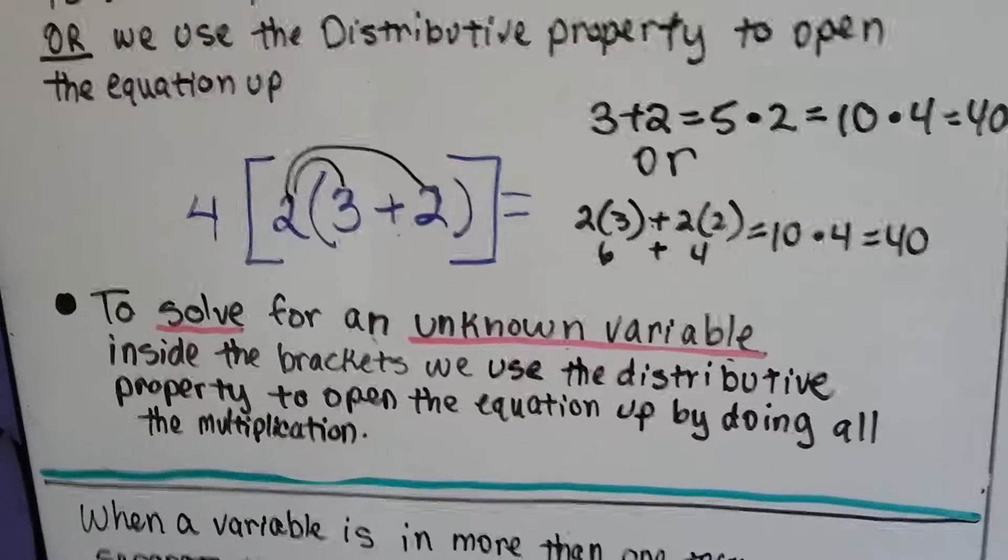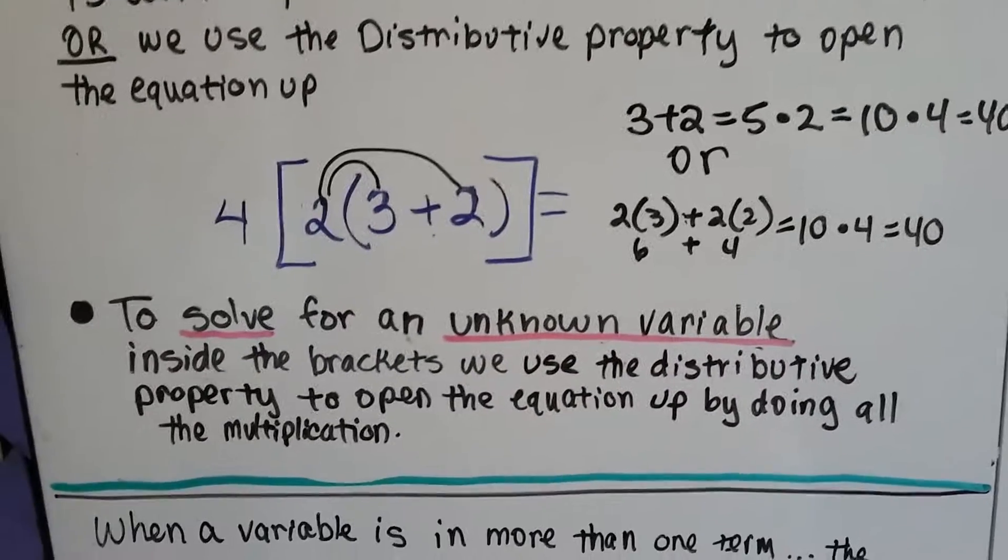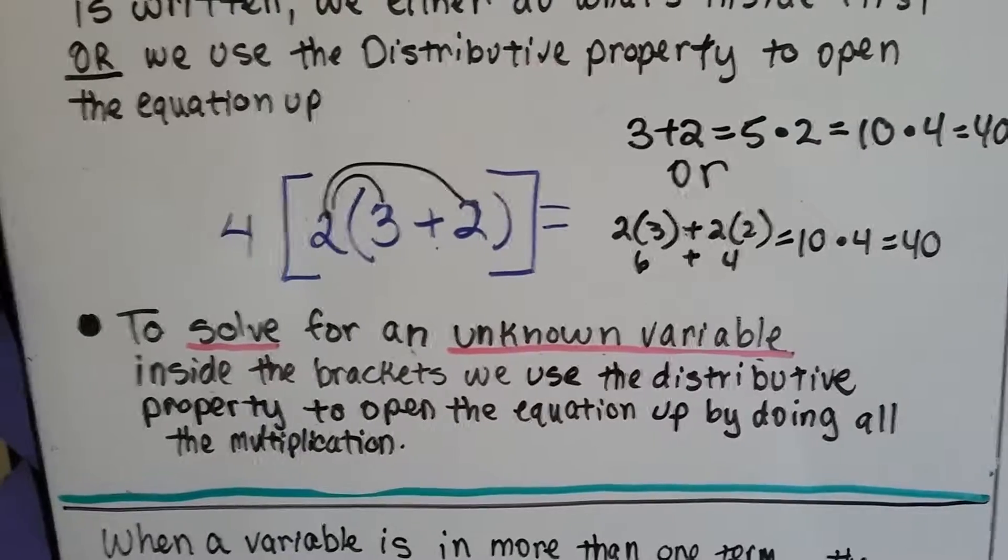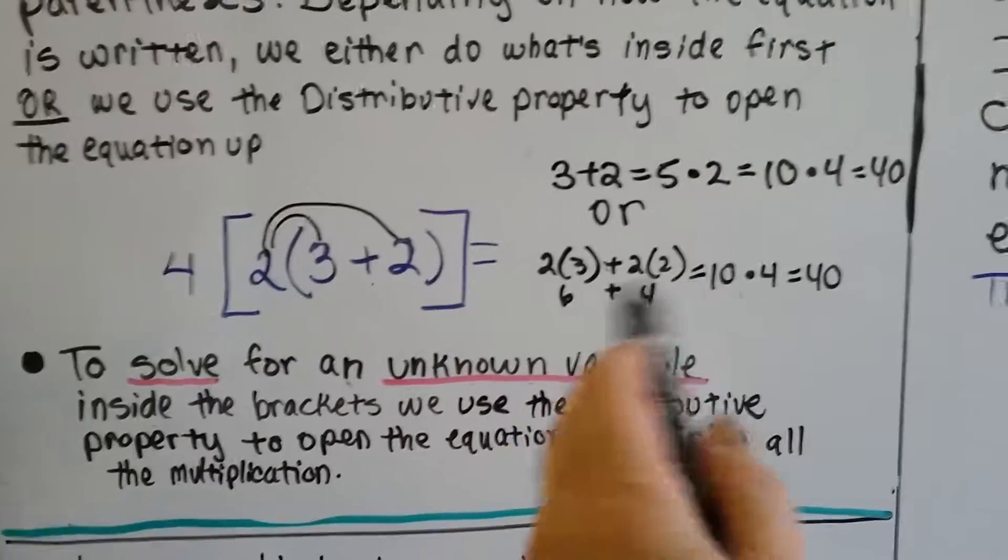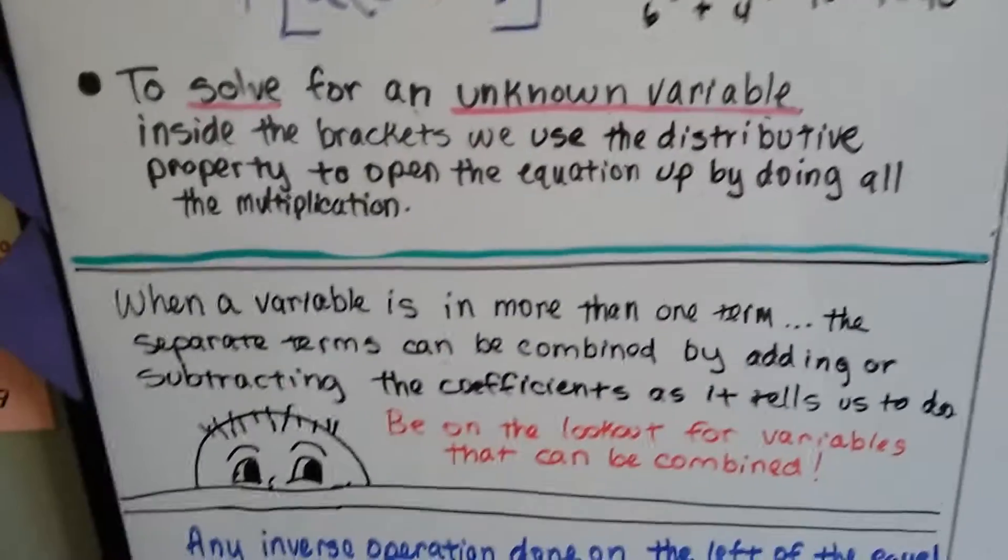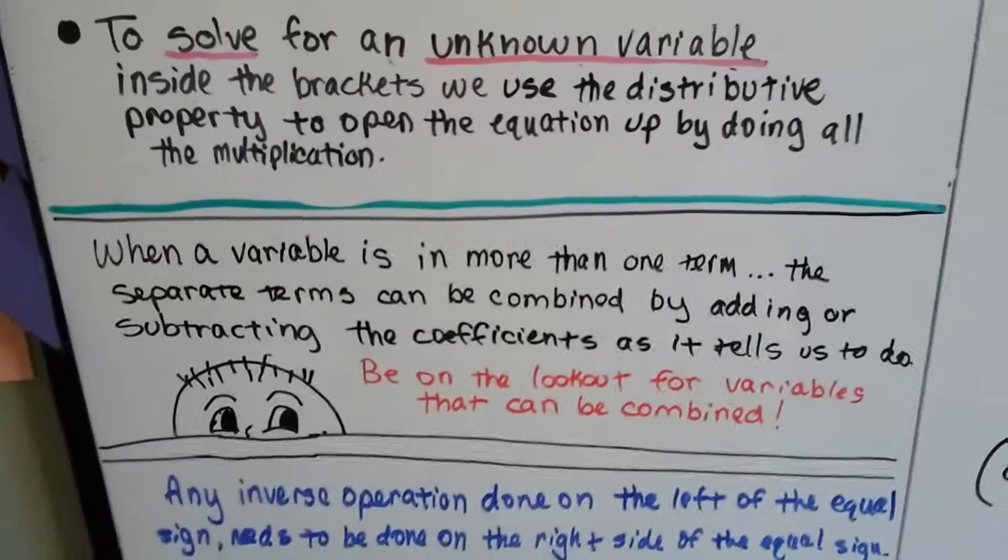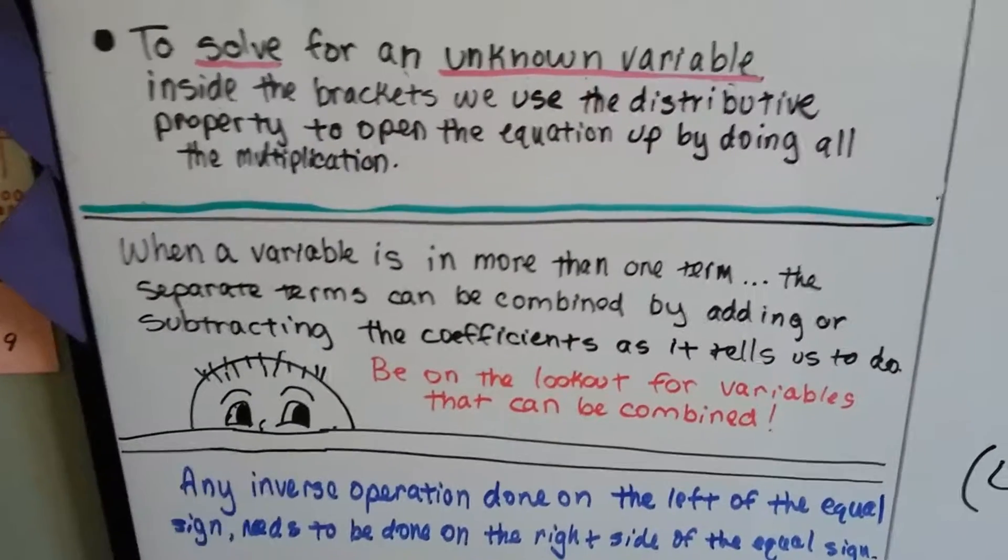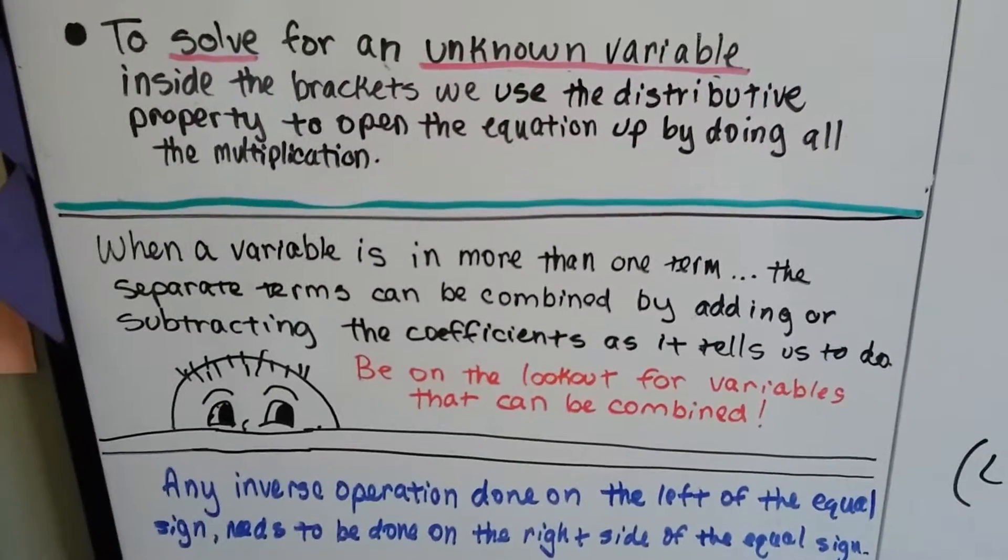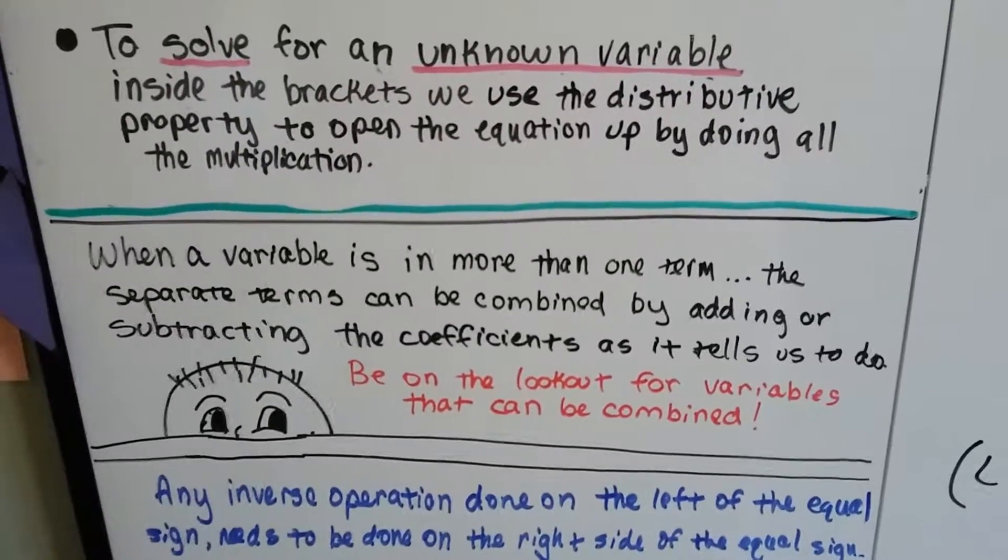To solve for an unknown variable inside the brackets, we use the distributive property to open the equation up by doing all the multiplication. When a variable is in more than one term, the separated terms can be combined by adding or subtracting the coefficients as it tells us to do so.